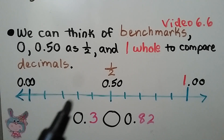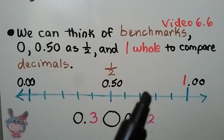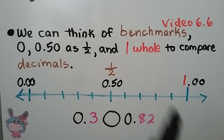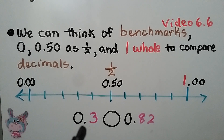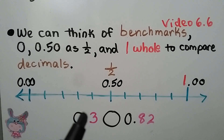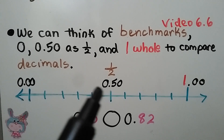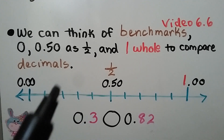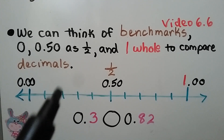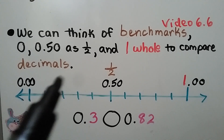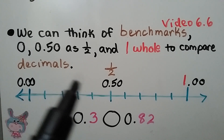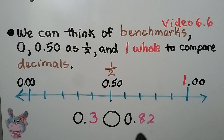Will the decimal be less than a half or greater than a half? We have three tenths. Three tenths is less than five tenths, so it would be less than a half — less than fifty hundredths.